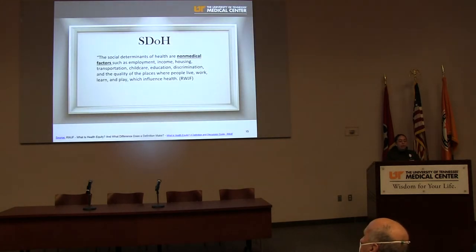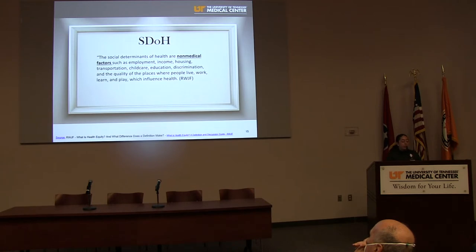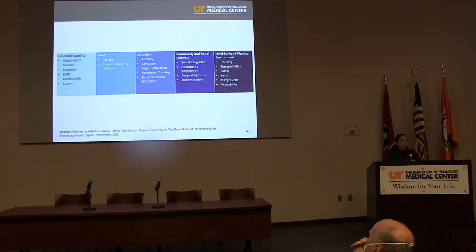That brings us to the final concept: the social determinants of health. These are non-medical factors — and this is very important because sometimes we think, why are we talking about that? Those are non-medical factors such as employment, income, housing, transportation, childcare, education, discrimination, and the quality of the places where people live, work, learn, and play, which influence health. When we talk about economic stability, we're talking about employment, income, expenses, etc. When we talk about food, we're talking about hunger but also access to healthy options. When we talk about education, we're talking about literacy, language, etc.